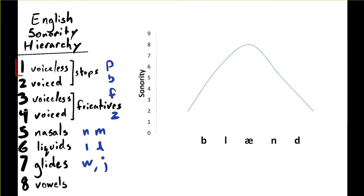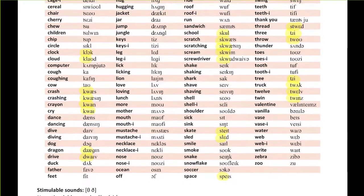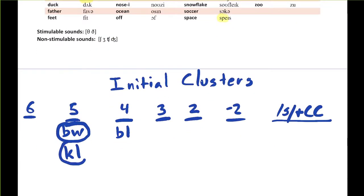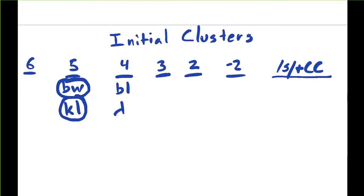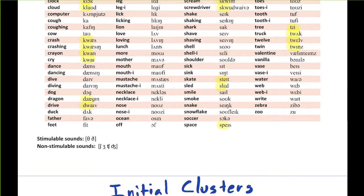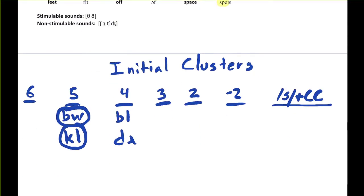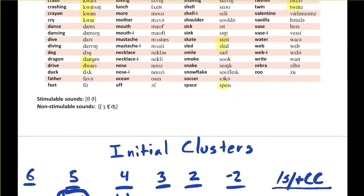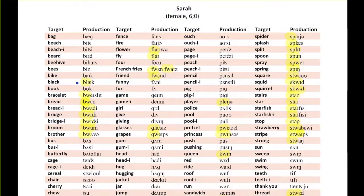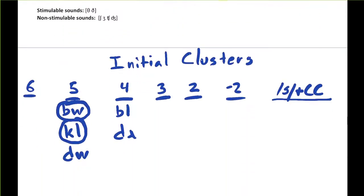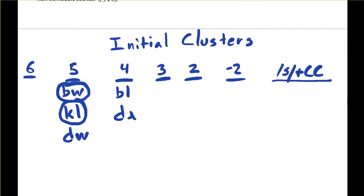We have cl, which is a voiceless stop 1 and a liquid 6, a sonority distance of 5. There was more than one instance, so we'll circle it. Next, we have dra, another sonority distance 4 cluster. We have fl, and that is going to be another 5 cluster. There were two instances there. Scratch that. The first segment is a voiceless fricative, which makes it a sonority distance 3 cluster, not a sonority distance 5 cluster.